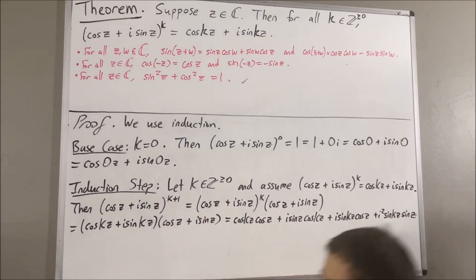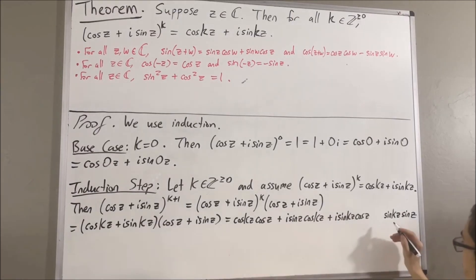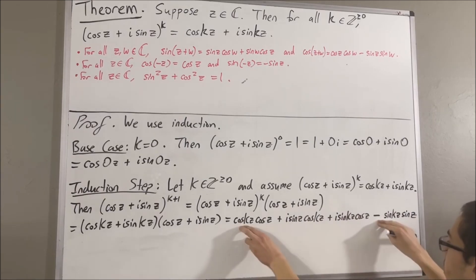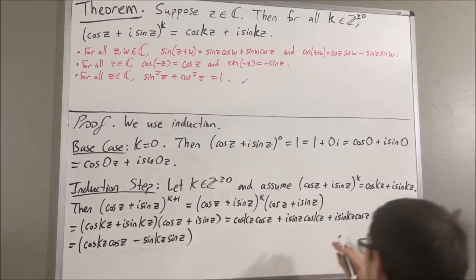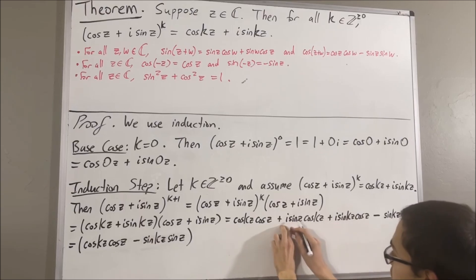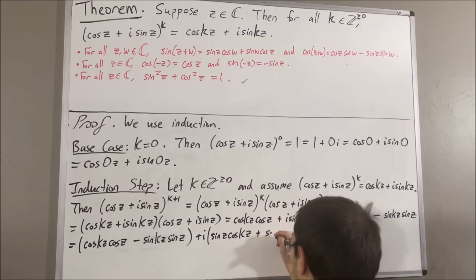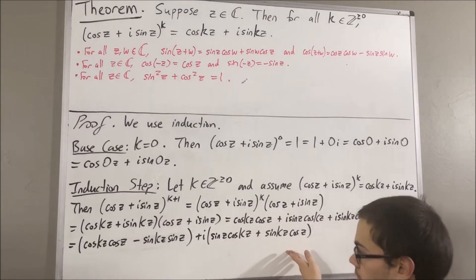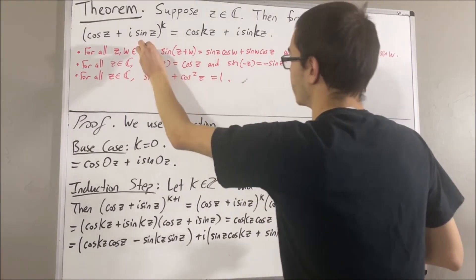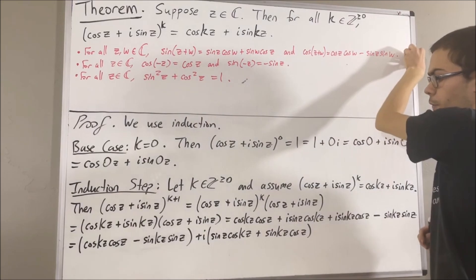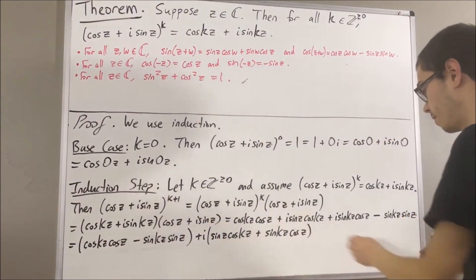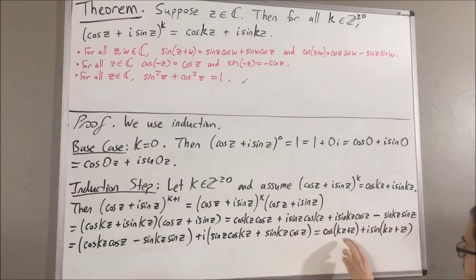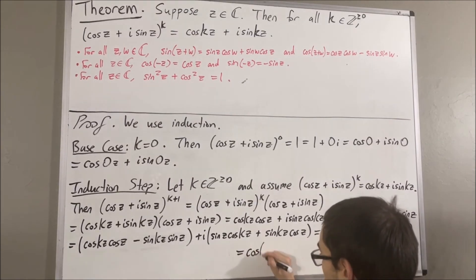But then, we know that i squared is equal to negative 1. So, this just becomes a minus sign. And now, let's group together the first and last terms, and let's group together the terms that contain i. We'll factor out an i from those two terms. If we apply the addition formulas, then this is just cosine of kz plus z. This is just sine of kz plus z. But then, in the parentheses, we're going to factor out a z. And if we do that, we get this.